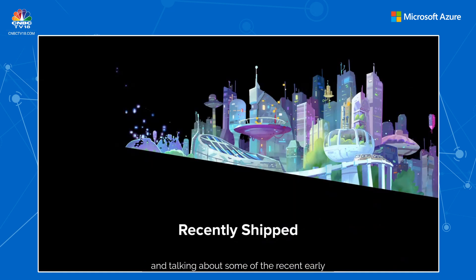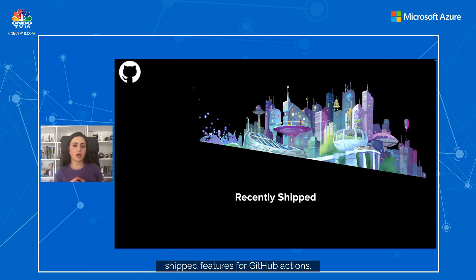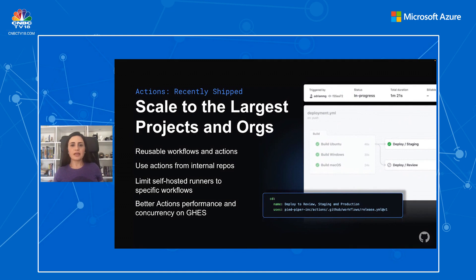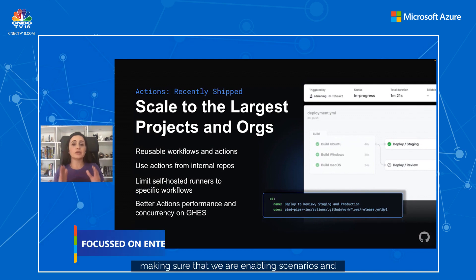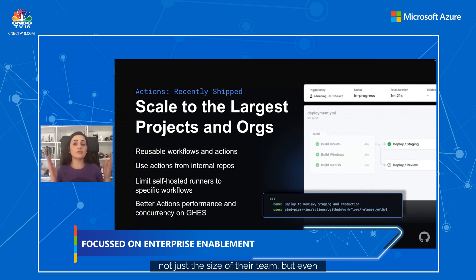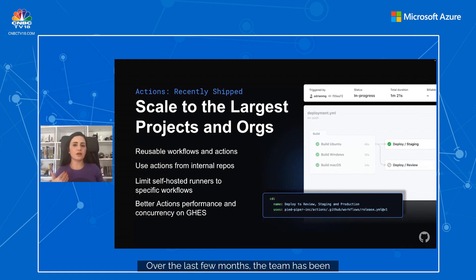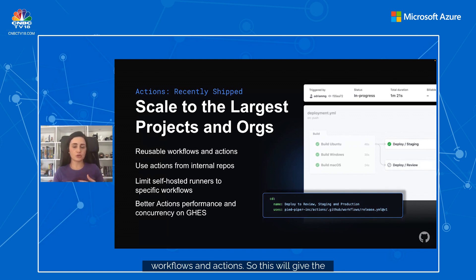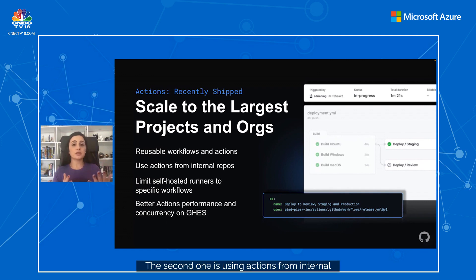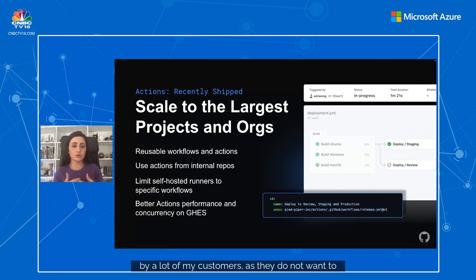Now let's highlight some of the recently shipped features for GitHub Actions. We are very focused on enterprise enablement, making sure we're enabling scenarios and features that large teams need to scale — both the size of their team and for large projects. Over the past few months, the team has been working on features such as reusable workflows and actions, giving teams the ability to not have to rewrite their workflows over and over again. Another popular feature requested by many customers is using actions from internal repos, as they do not want to use actions from public repos.